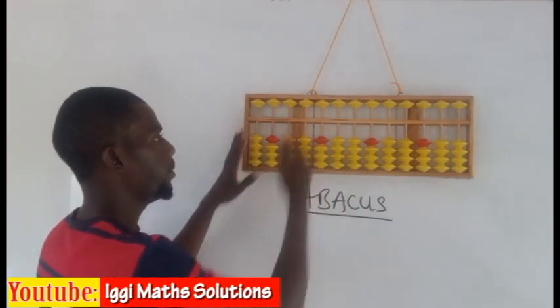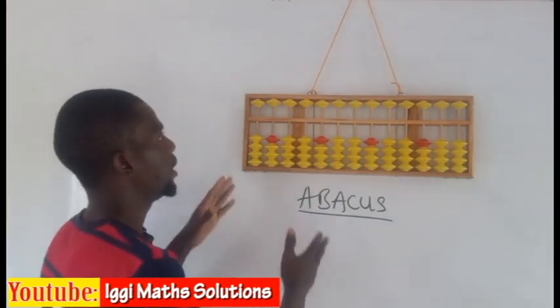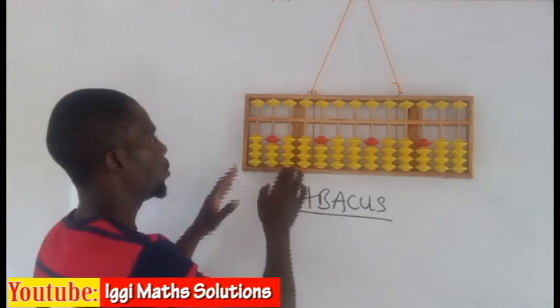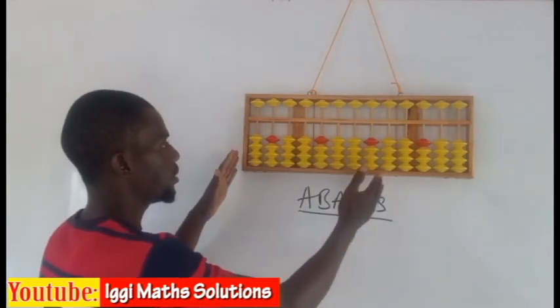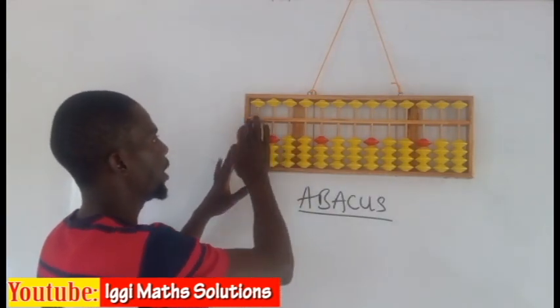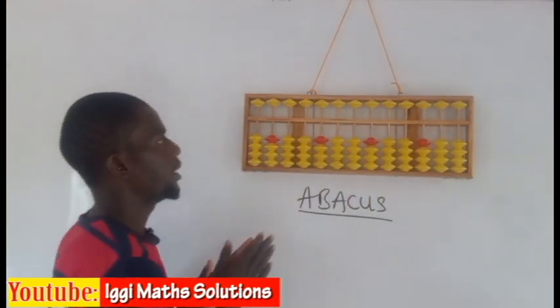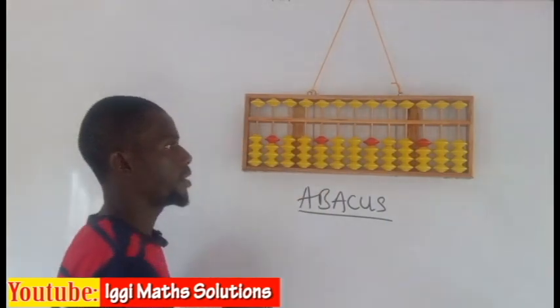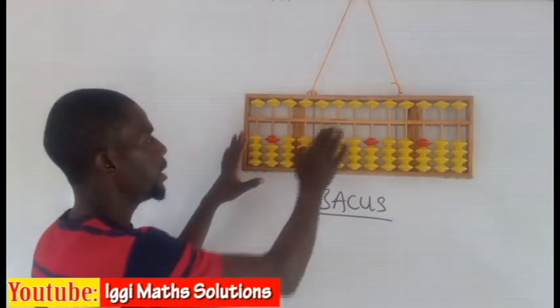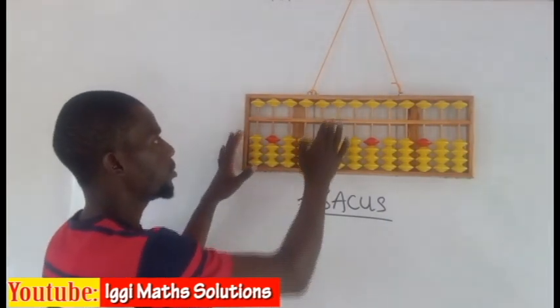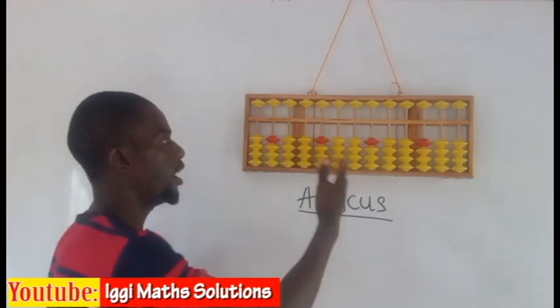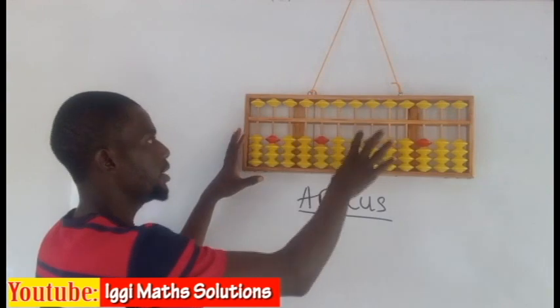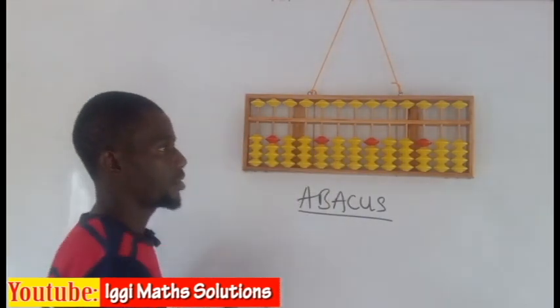In this type of abacus, there is what you call the answering bar or equal bar that is placed in between the lower bit and the upper bit. Each bead that touches this equal bar tells the value of the abacus. Therefore, like this abacus as it is, it is zero abacus. The value of this abacus is zero.